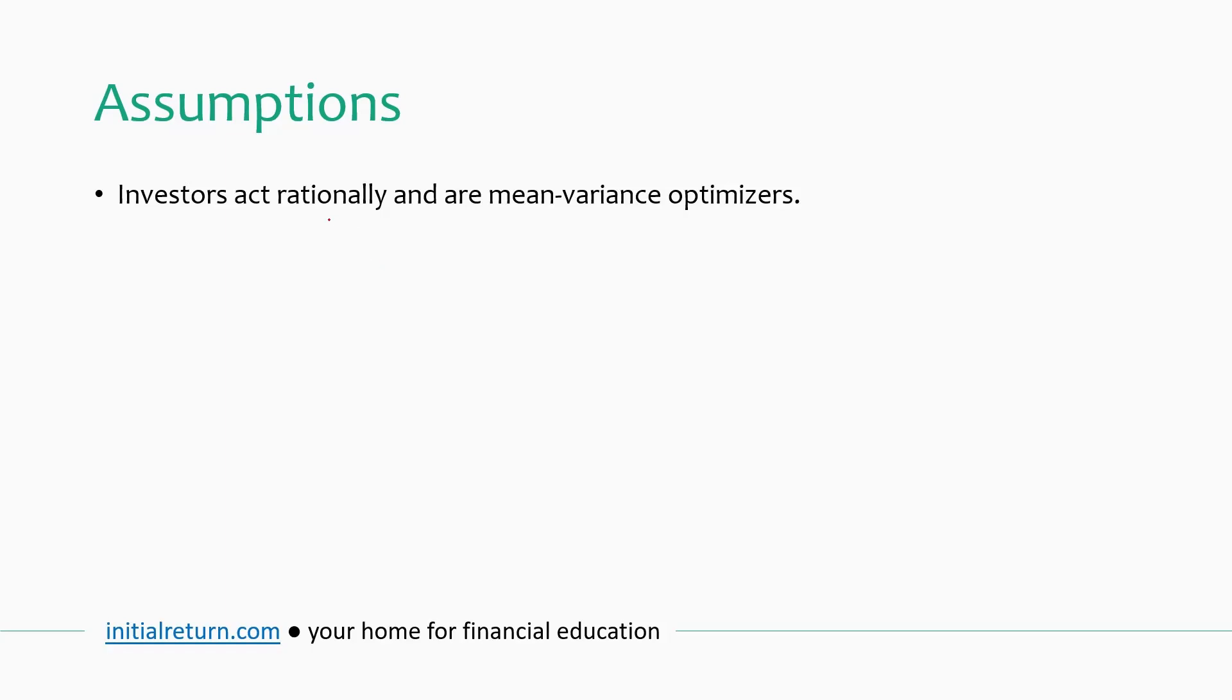So the very first assumption is that investors act rationally in the sense that they don't make silly mistakes or they don't suffer from behavioral biases and that they are mean variance optimizers, which I have explained at the start. This all means that basically we act according to portfolio theory in the sense that we care about return volatility and expected return. And we know where the stocks are. So we try to come up with the efficient frontier and try to find the optimal risky portfolio. So this is what we mean by mean variance optimization.